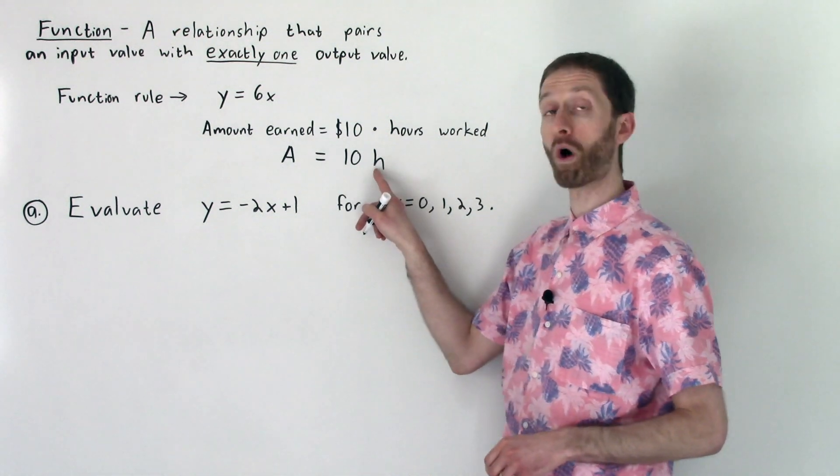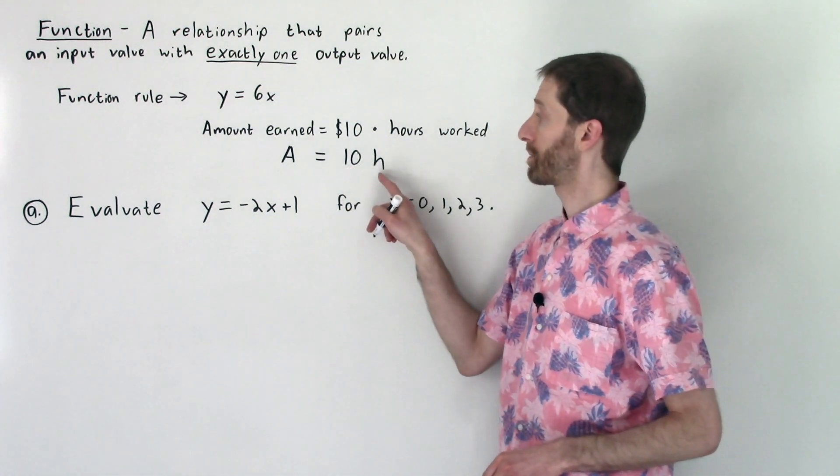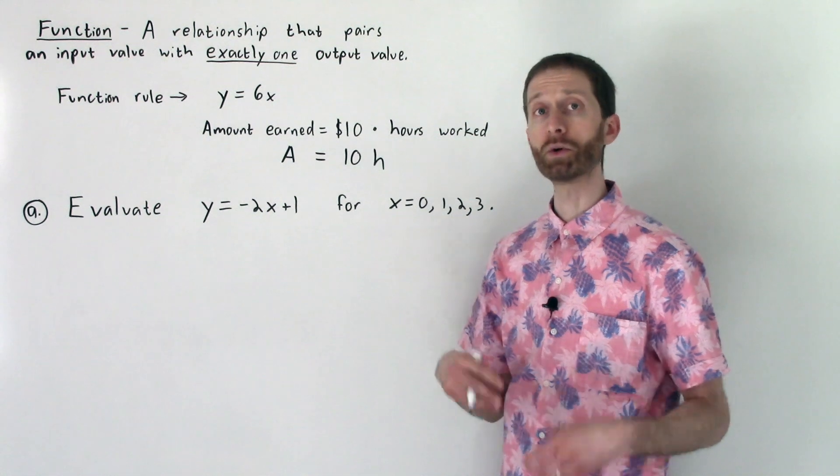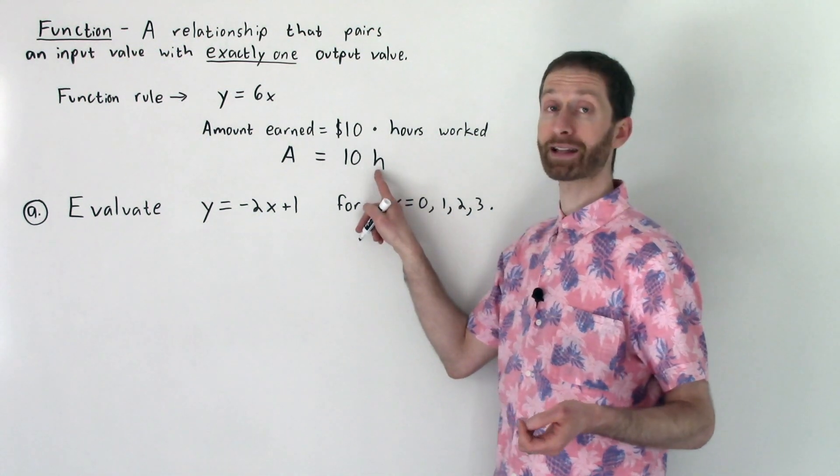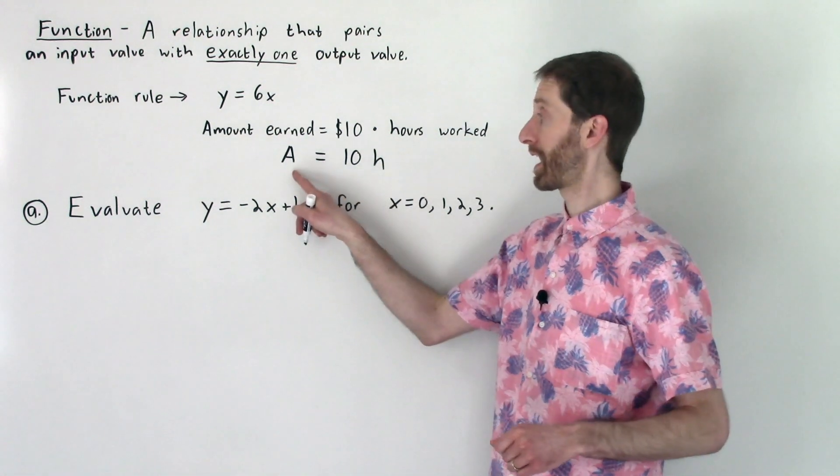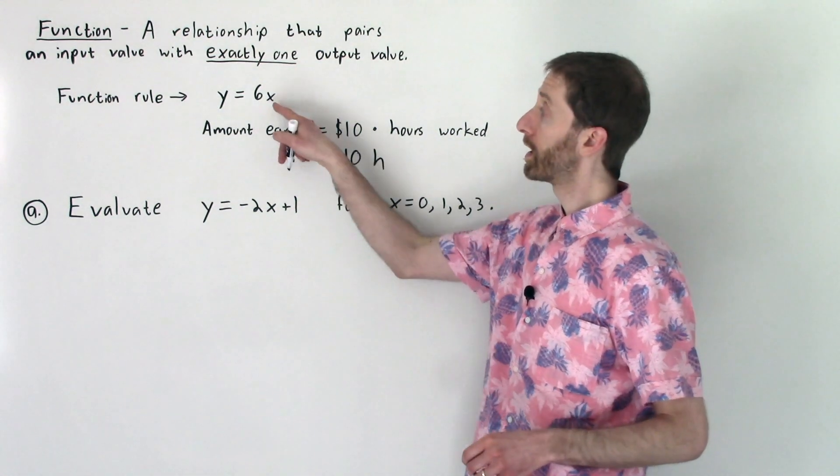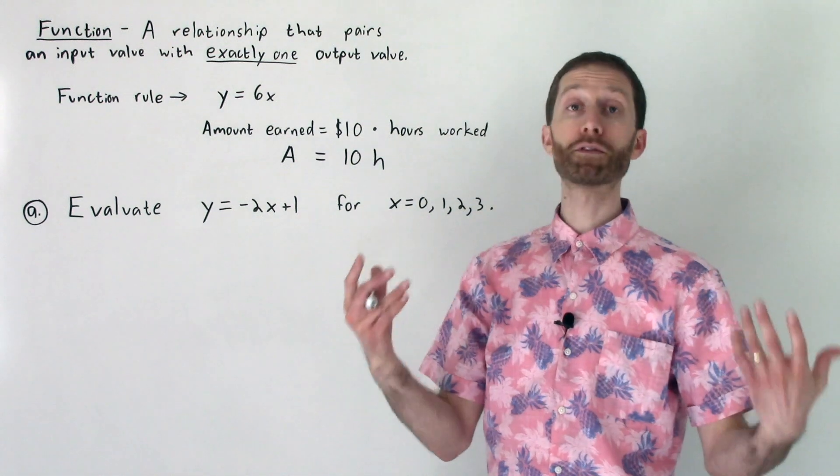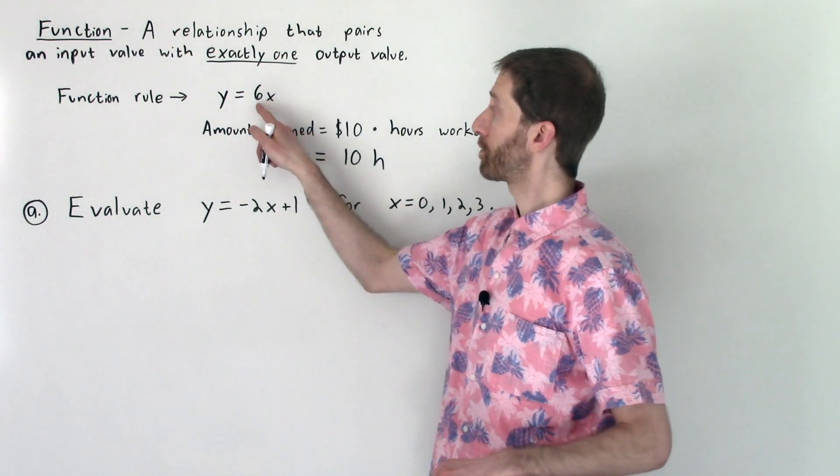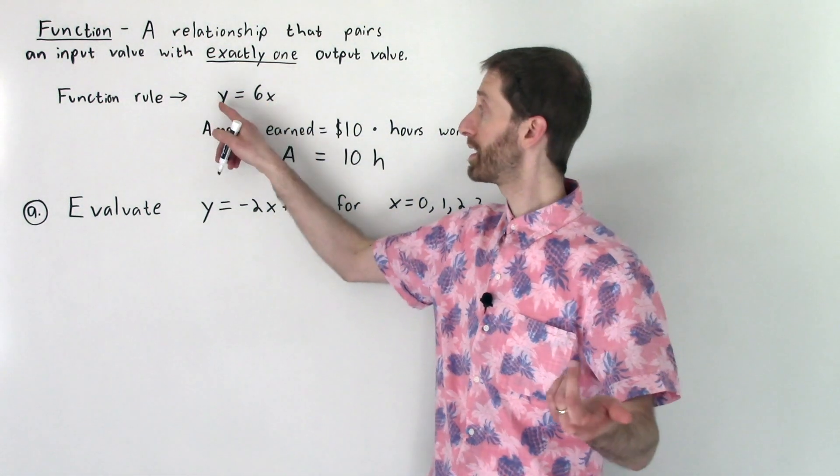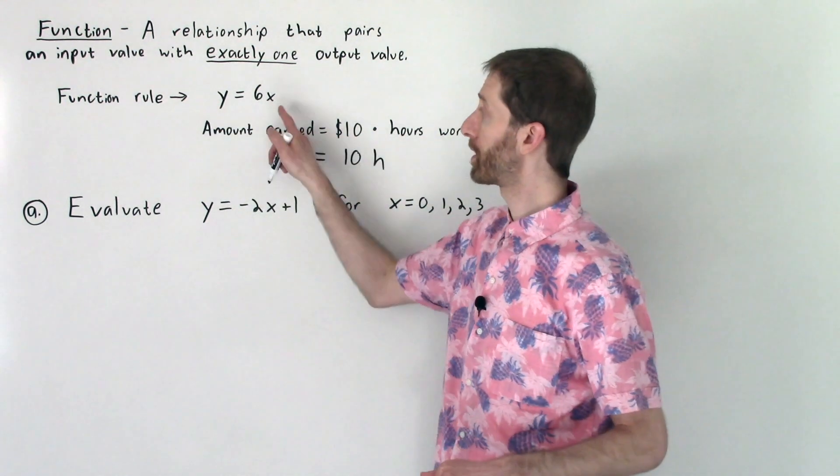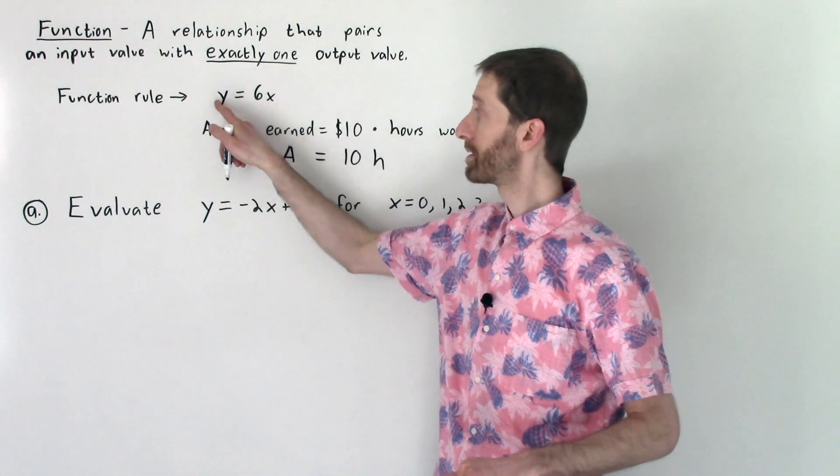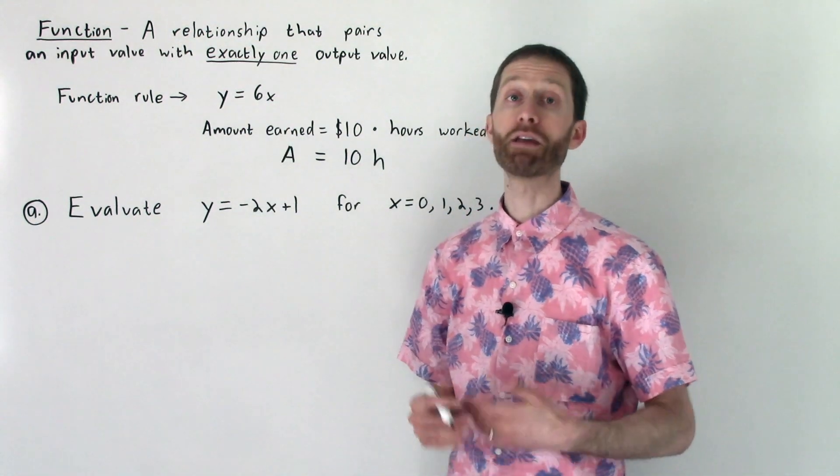For instance, if I put in the number one for hours, I'd get 10 times 1, and that equals out to 10. If I plug in 1, I don't expect to get out anything else besides 10, and that makes this a function. Here, if I were to plug in negative 3 for x, negative 3 times 6 is negative 18 is my output. I will not get out any other number when I plug in negative 3 except negative 18, making that a function.